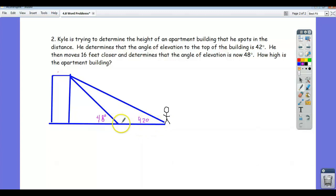It doesn't say he moved until he was 16 feet away from the building. It means he moved 16 feet closer to the building. So this section here is 16 feet. And then we're asked to determine the height of this apartment building. So there's something about this problem that makes you feel like you don't have enough information to solve it, but the truth is we actually do.